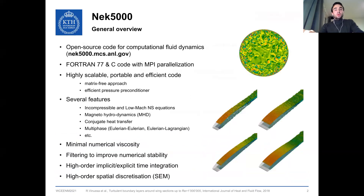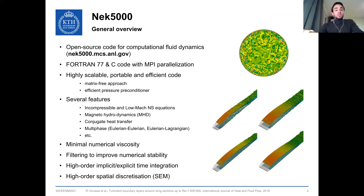Let me first start from the code that we are currently using, NEC5000, which is an open source CFD code, mainly written in Fortran 77, around 90%, the remaining 10% is written in C, and it is based on MPI as standard for parallelization. It has demonstrated very high scalability, up to 1 million MPI ranks, and even very good portability, and we can model different kinds of flows. One of the most important features of NEC is the minimal numerical viscosity, so we are able to catch, evaluate, and also keep track of the smaller scales, but of course this can be an issue from the numerical stability point of view, so some filtering options are available.